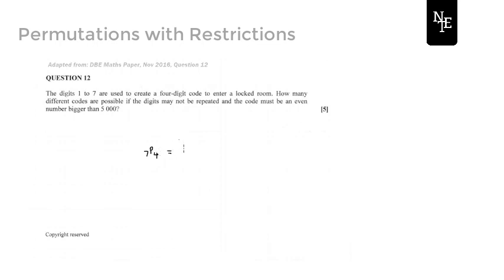So you would basically just have 7 pick 4. We know that this would become 7 factorial divided by (7 minus 4) factorial. So this is just straightforward application of your permutation formula. But unfortunately, they don't stop the question right here — they carry on and add some restrictions that you need to take into account, so you can't just apply the permutation formula.